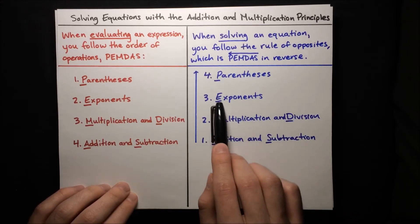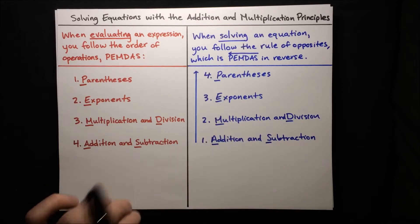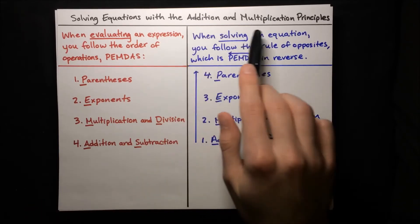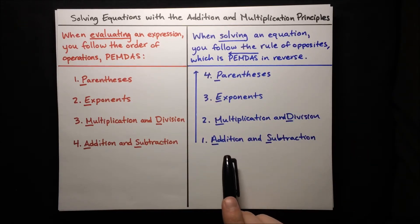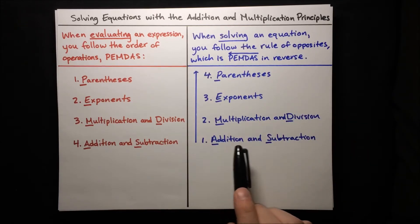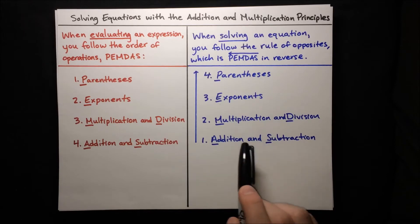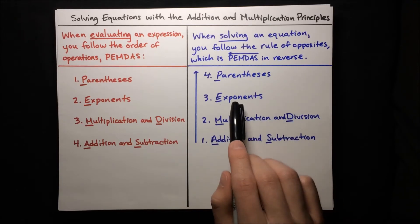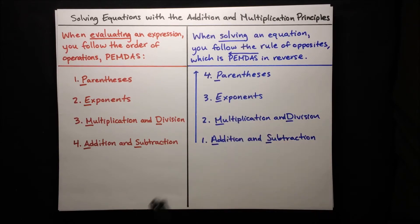And then after that, exponents, and then after that, parentheses. In the following examples, though, we're just going to focus on the addition and multiplication principles. So we just need to remember to do addition and subtraction first, and then multiplication and division. We don't need to worry about exponents or parentheses in the examples we're going to see.